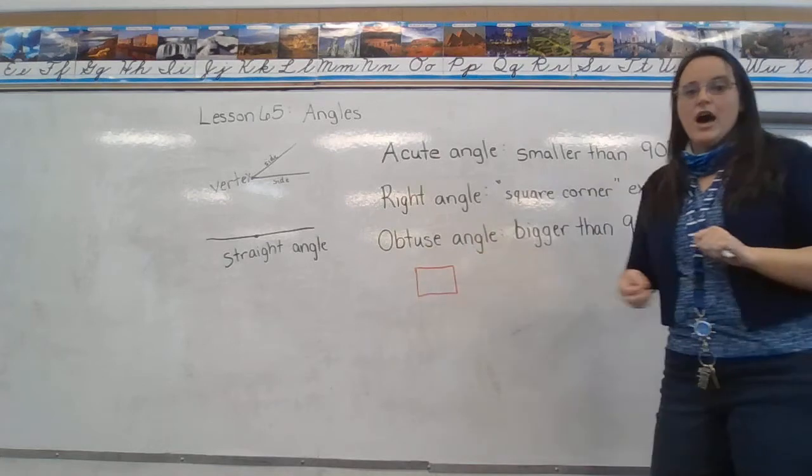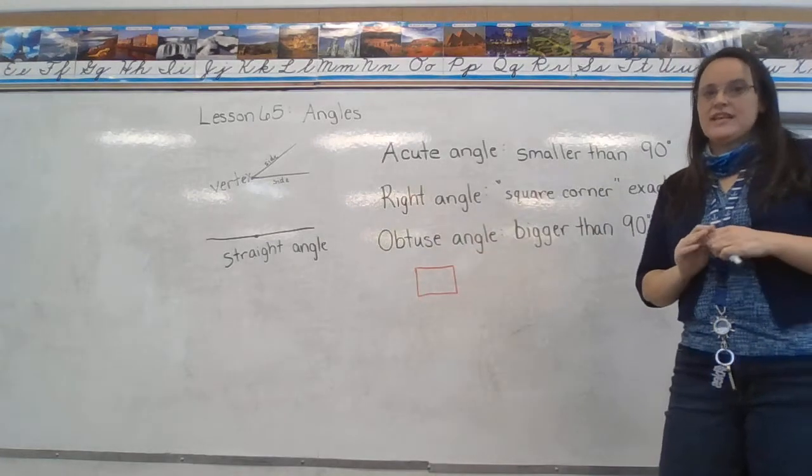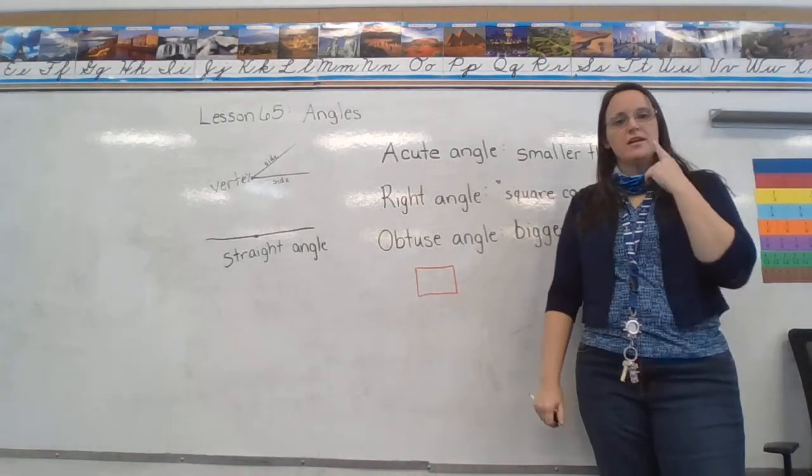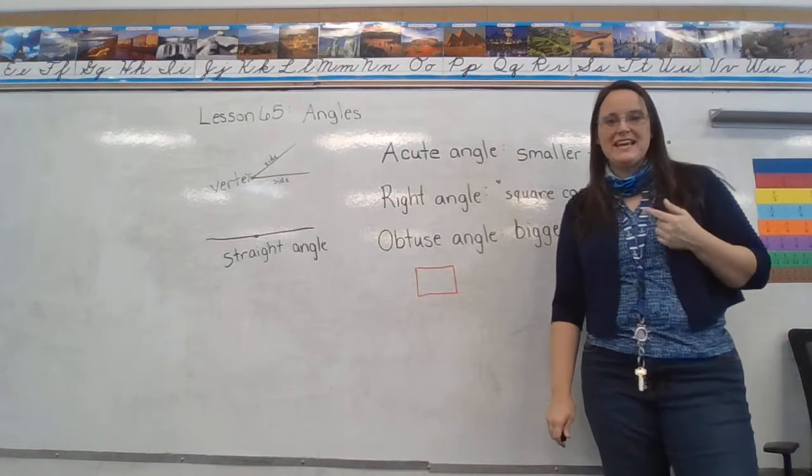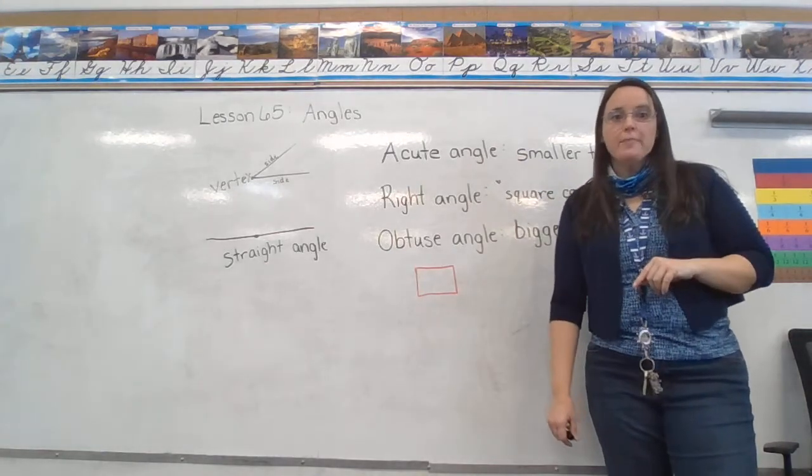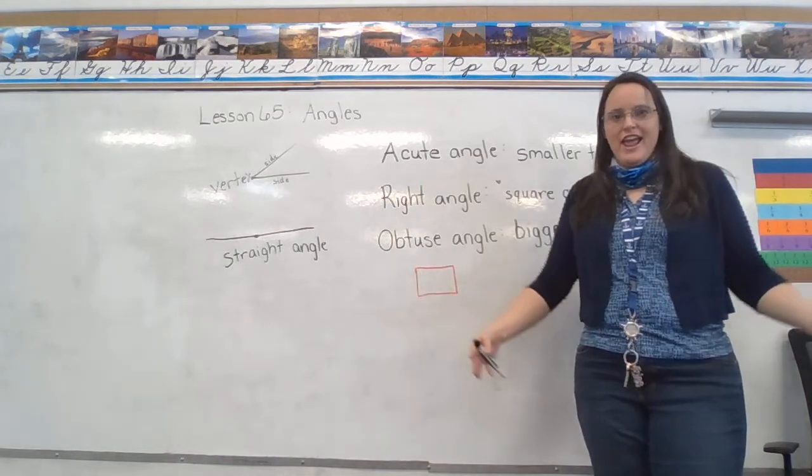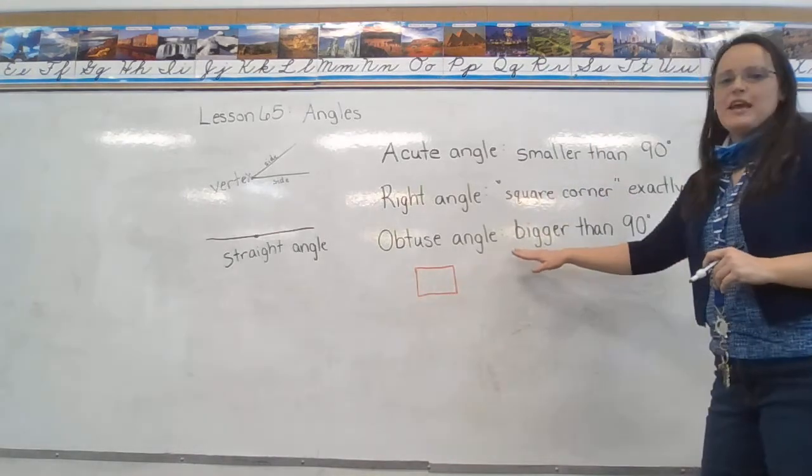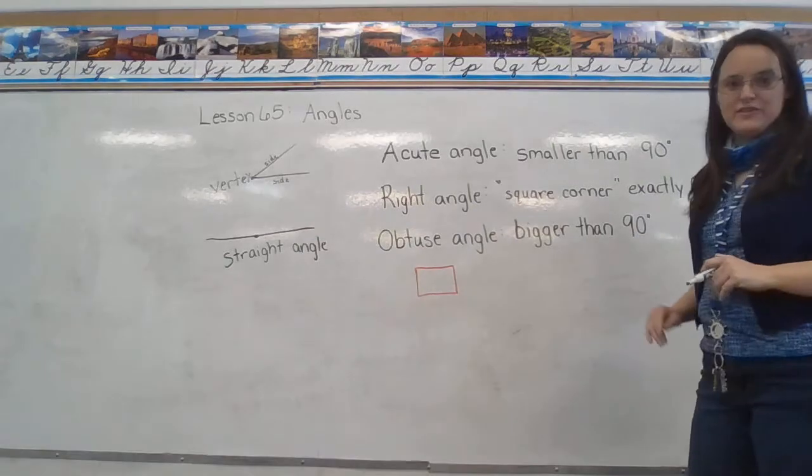And then we have obtuse angles. When we say ob, our mouth opens really big and wide to say that ah sound. Obtuse angles are big fat angles. They're anything bigger than 90 degrees.